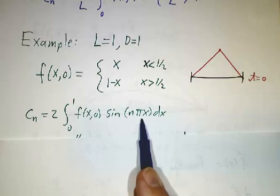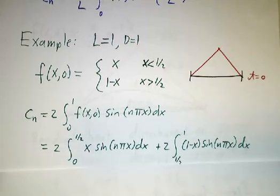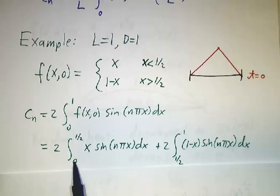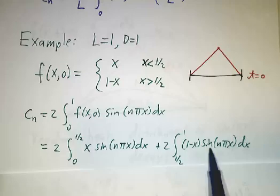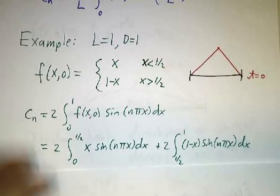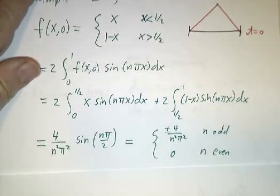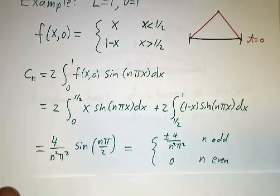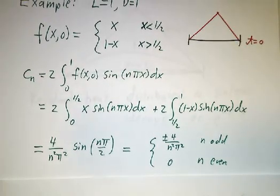And that's the integral from zero to a half of x times sine, plus the integral from a half to one of one minus x times sine. And I'm not going to do the integrals here. You can find the details in section 6.9 of my book. This is example two.